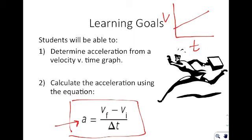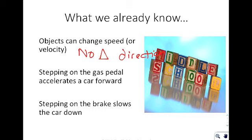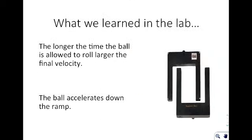From previous lessons in this unit, we know that objects can change speed or velocity — those two are interchangeable as long as there is no change in direction. We know that when you step on a gas pedal you accelerate the car forward, increasing the speed, and that stepping on the brakes will slow the car down, decreasing the speed.